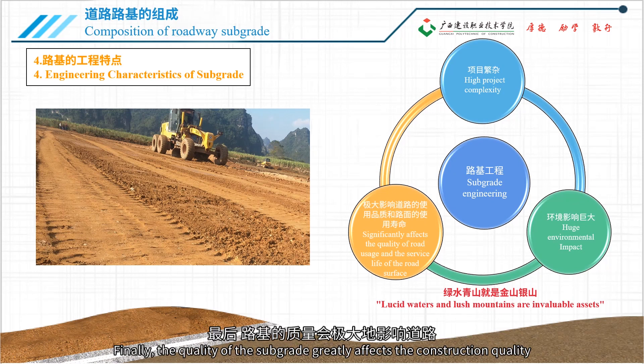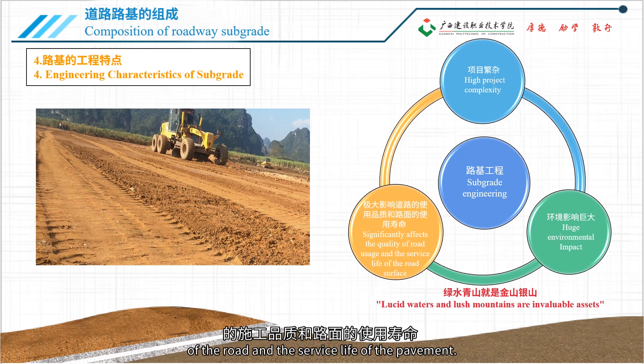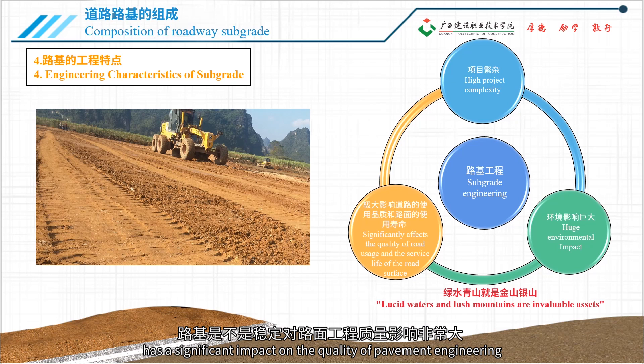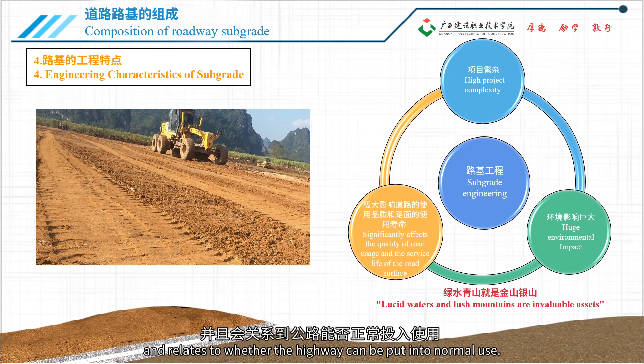Finally, the quality of the subgrade greatly affects the construction quality of the road and the service life of the pavement. Practice has proven that the stability of the subgrade has a significant impact on the quality of pavement engineering and relates to whether the highway can be put into normal use.